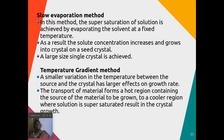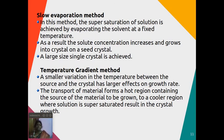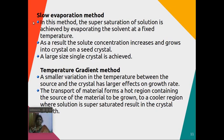In the slow evaporation method, supersaturation of the solution is achieved by evaporating the solvent at a fixed temperature. A supersaturated solution is prepared and the solvent is allowed to evaporate, increasing the solute concentration. As a result, the crystal grows on a seed crystal, and a large size crystal is achieved.